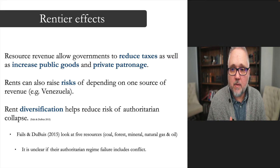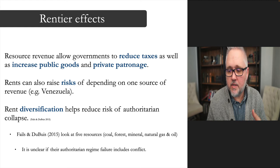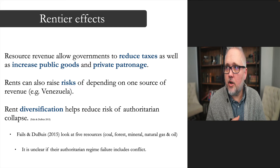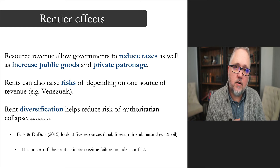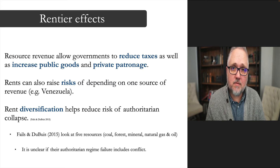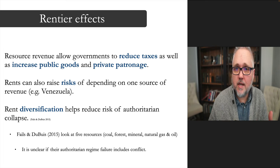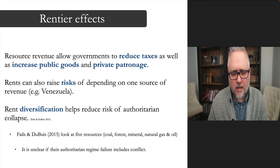Fails and DuBuis look at five resources — coal, forestry production, minerals, natural gas, and oil — to examine how they could affect authoritarian survival. We'll talk about that in the workshop. In their authoritarian regime measure, based on Barbageddice's measure of authoritarian regimes, it wasn't entirely clear whether regime failure actually included conflict. My instinct is that it does, but that would be an interesting research question for an honors thesis — digging into previous research and their assumptions, tweaking it to use a different outcome to see whether that changes the relationship between resource rents and political outcomes.